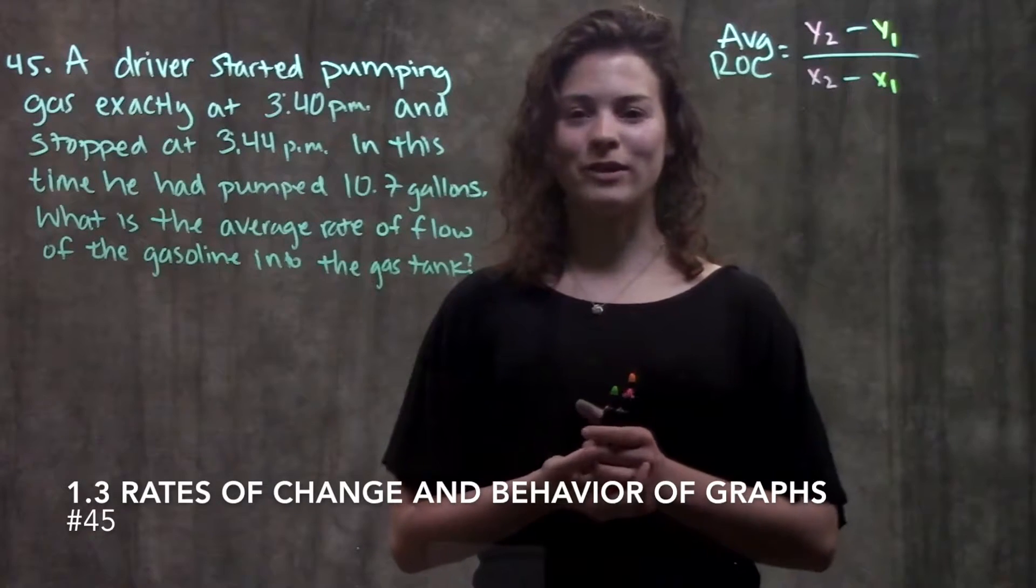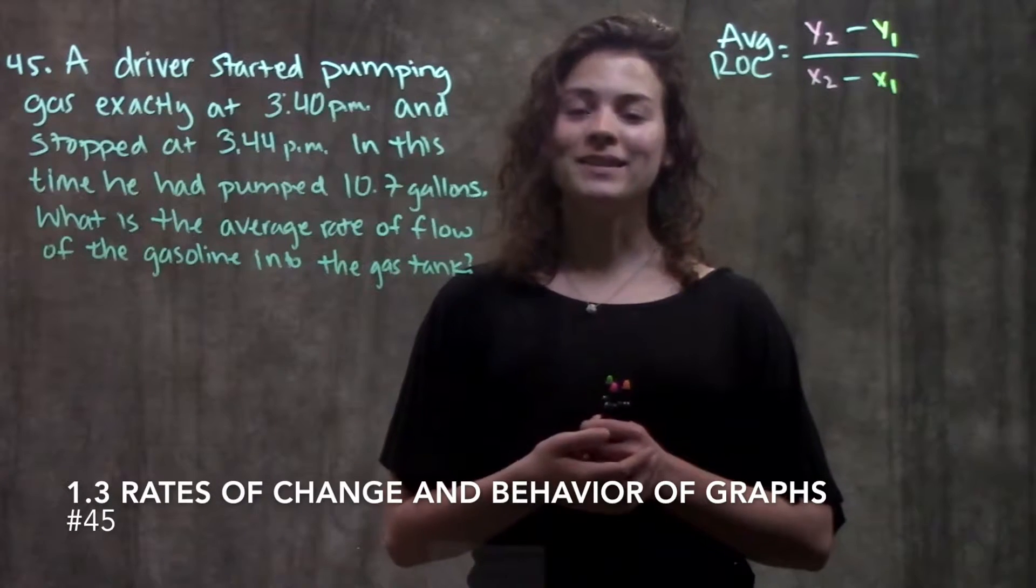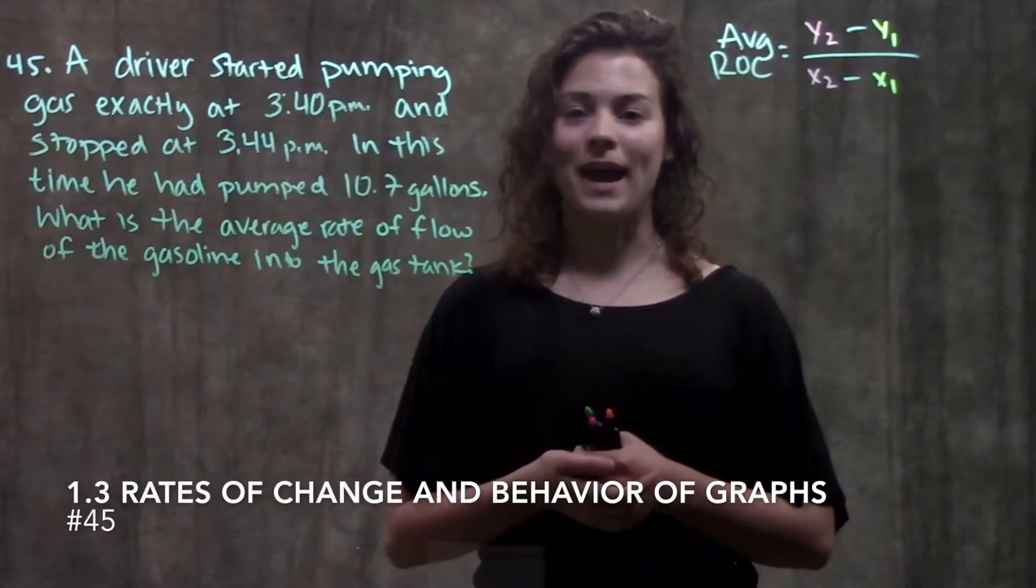This is section 1.3, average rate of change. In this video, we're going to go through number 45 in your book, and this is an example of a word problem involving average rate of change.